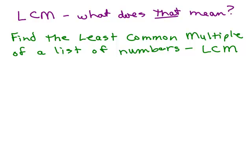This video is going to go over least common multiple, often written LCM. First, let's talk about what that means. We're going to find the least common multiple of a list of numbers — two numbers, three numbers, et cetera — and I will do videos on the different types of methods. But first, let's talk about what it means.